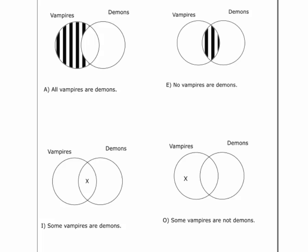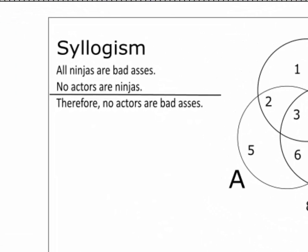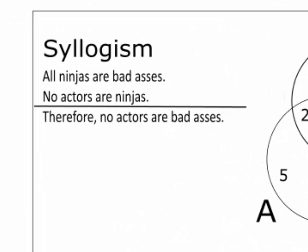A certain type of argument is of special interest to us. It's called a categorical syllogism. Here's an example of a categorical syllogism: All ninjas are badasses, and no actors are ninjas, therefore no actors are badasses.